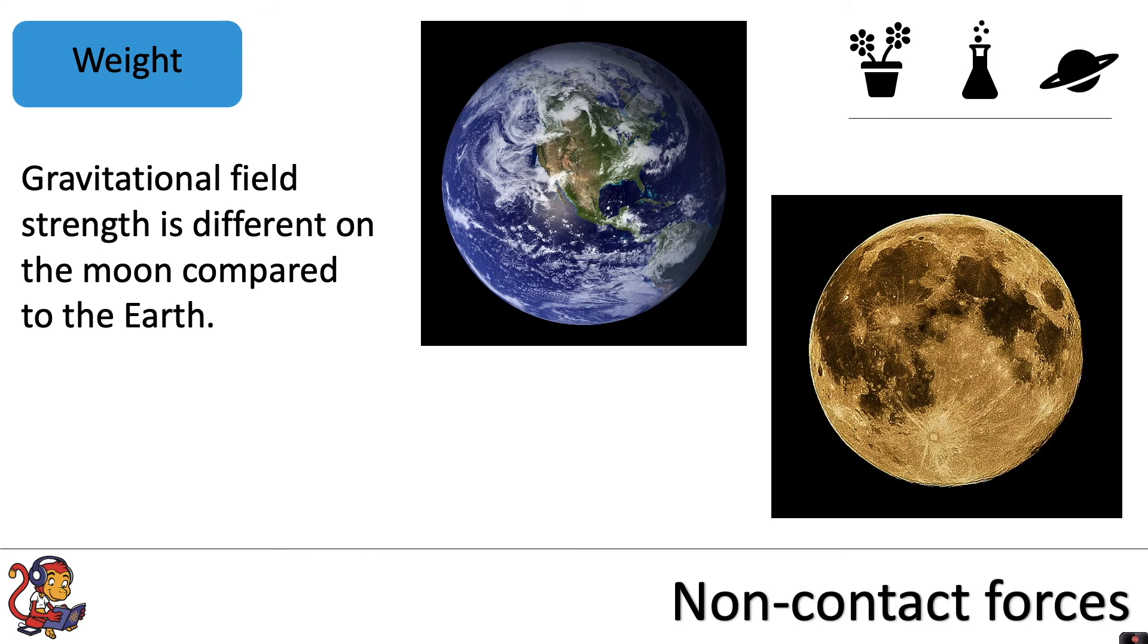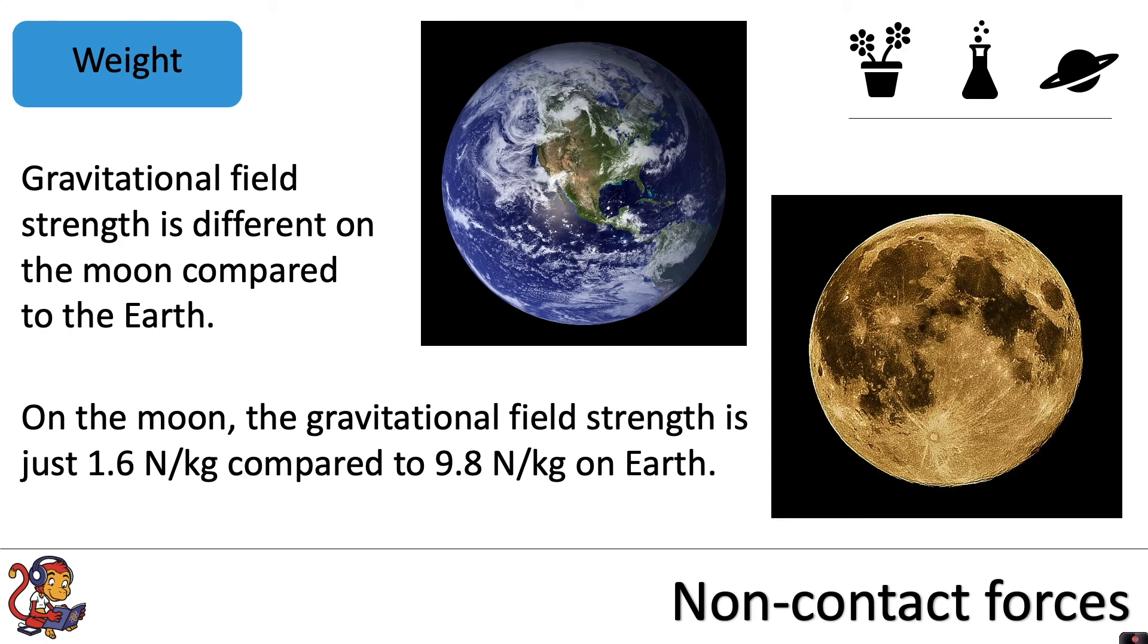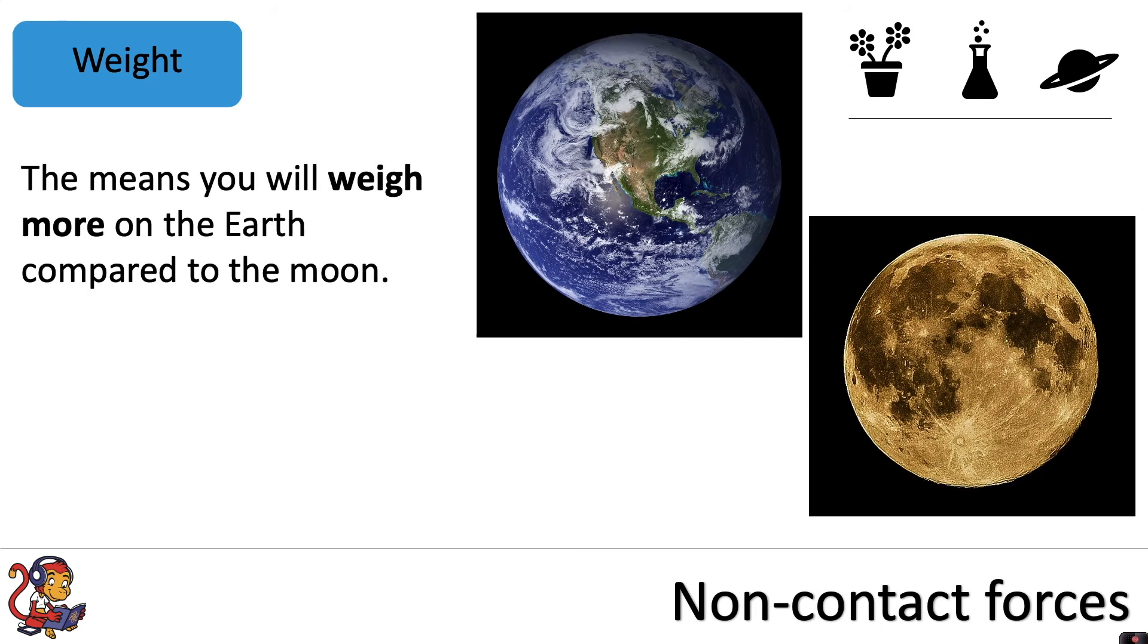Gravitational field strength is different on the Moon compared to the Earth. On the Moon, the gravitational field strength is just 1.6 newtons per kilogram, compared to 9.8 newtons per kilogram on Earth. This means you will weigh more on the Earth compared to the Moon.